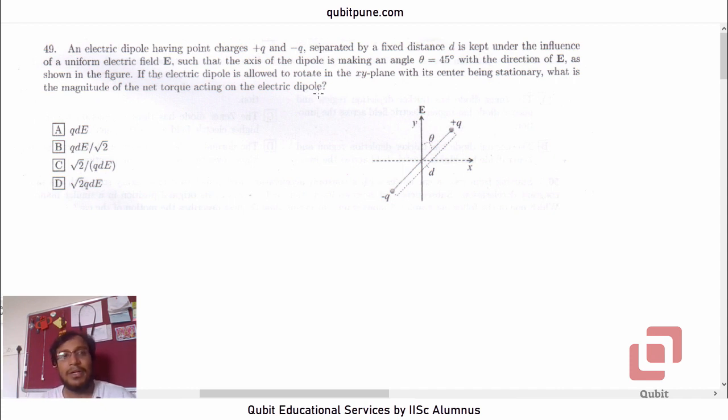An electric dipole having point charges plus Q and negative Q separated by a fixed distance d is kept under the influence of a uniform electric field E bar such that the axis of the dipole is making an angle theta equal to 45 degrees with the direction of electric field as shown in the figure. If the electric dipole is allowed to rotate in the xy plane with its center being stationary, what is the magnitude of the net torque acting on the electric dipole?